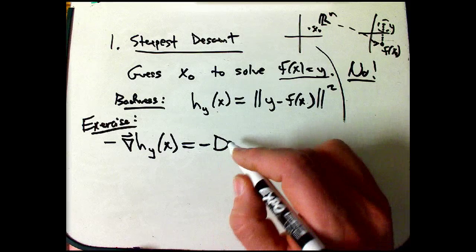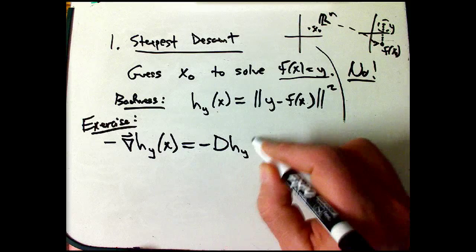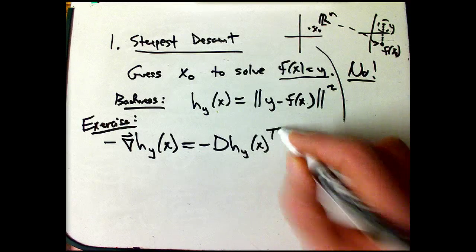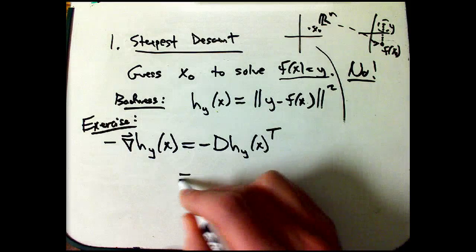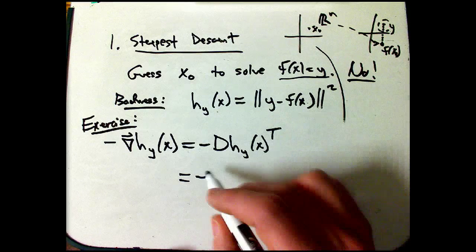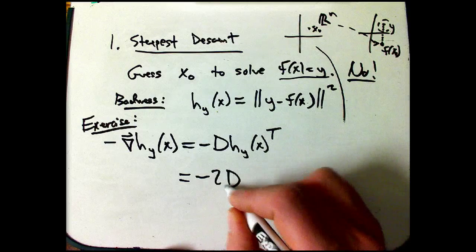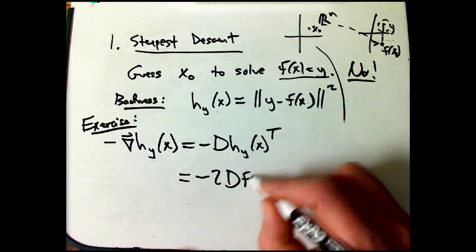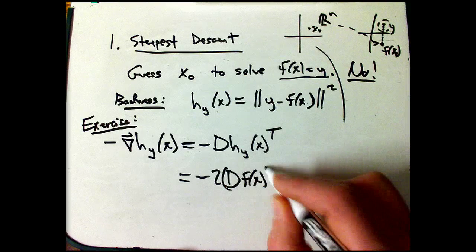When we think about the matrix of derivatives, the gradient is just the matrix of derivatives, but then thought of as a vector, in other words, transposed. And the claim is, it comes out of the matrix of derivatives of f. It's minus 2 times the derivative of f at x.